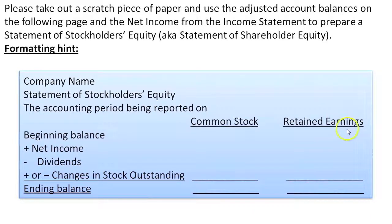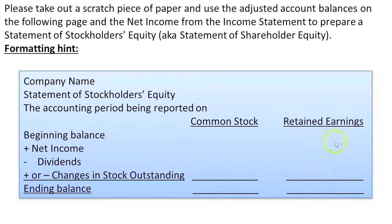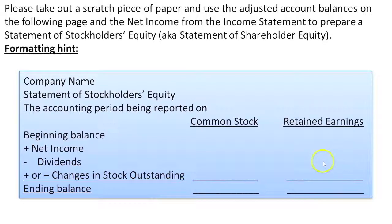Retained earnings is a little tricky because the beginning balance will come from the adjusted trial balance; however, that retained earnings will not yet have been adjusted for net income, less dividends. It's here in the Statement of Retained Earnings that you'll arrive at the ending adjusted retained earnings that will go on the balance sheet. In this case we started with no retained earnings because it was a brand new company. We're going to add the net income from the income statement and deduct the dividends to arrive at the ending adjusted retained earnings, which will go on the balance sheet.